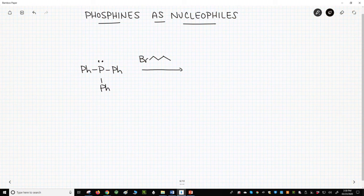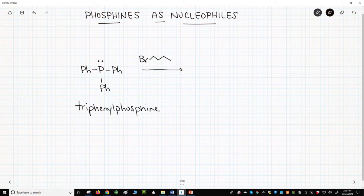On the screen is a phosphine, triphenylphosphine. It can do an SN2 on this primary halide, bromobutane. The product